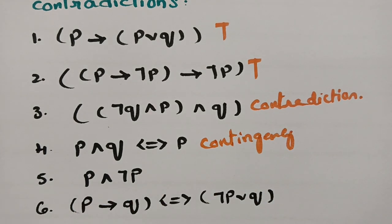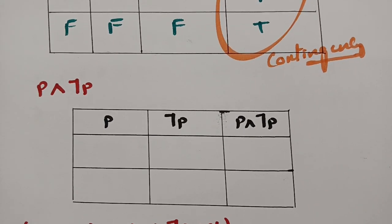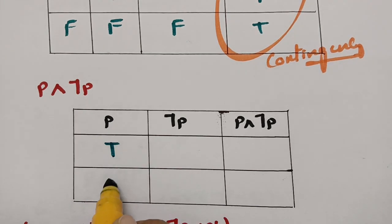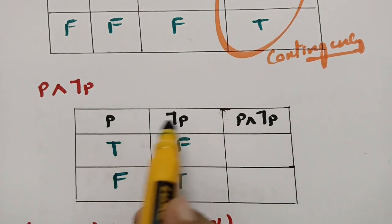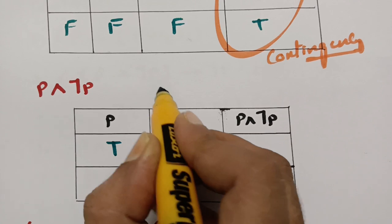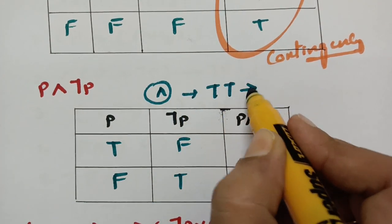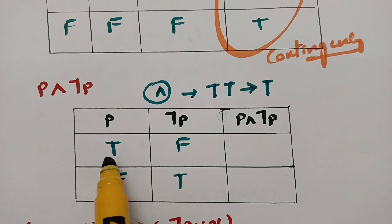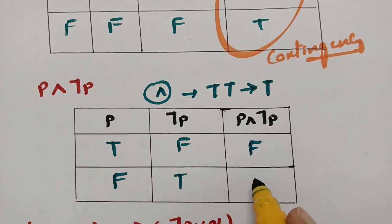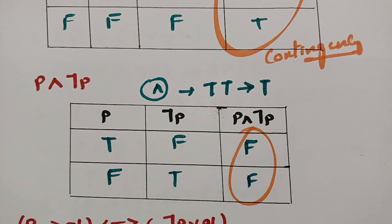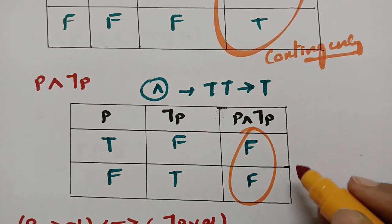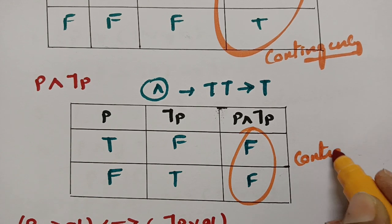The next formula is P ∧ ¬P. There is only one variable, so P is true and false. The negation: true gives false, false gives true. For the and symbol among P and ¬P: two trues give true, otherwise false. There are no two trues here, so we write false, false. Since the proposition is always false, this is a contradiction.